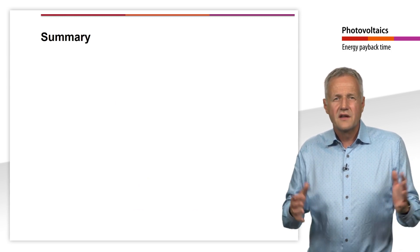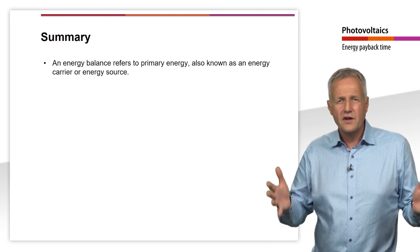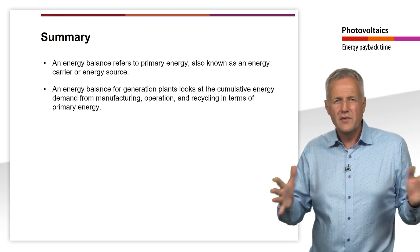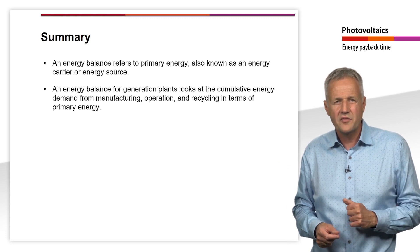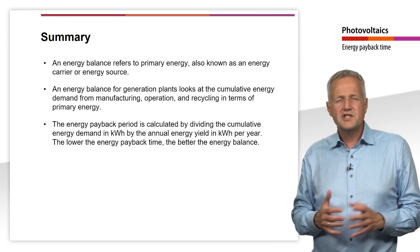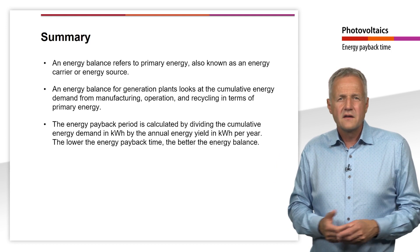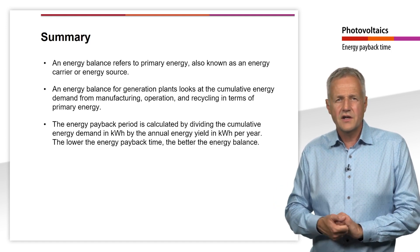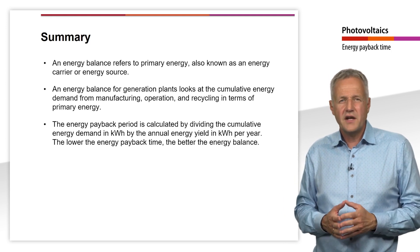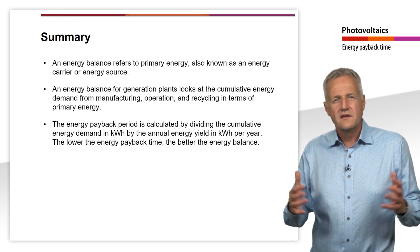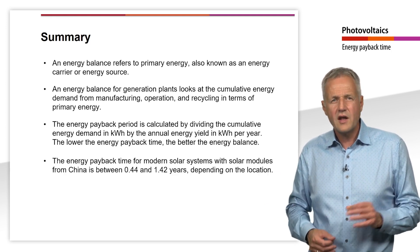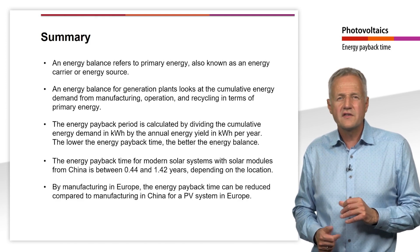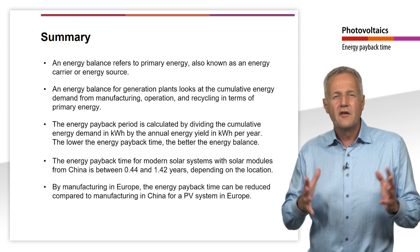Let's summarize the teaching unit. An energy balance refers to primary energy, also known as an energy carrier or energy source. An energy balance for generation plants looks at the cumulative energy demand for manufacturing, operation and recycling in terms of primary energy. The energy payback time is calculated by dividing the cumulative energy demand in kWh by the annual energy yield in kWh per year. The lower the energy payback time, the better the energy balance. The energy payback time for modern solar systems with solar modules from China is between 0.44 and 1.42 years depending on location. By manufacturing in Europe, the energy payback time can be reduced compared to manufacturing in China for a PV system in Europe.